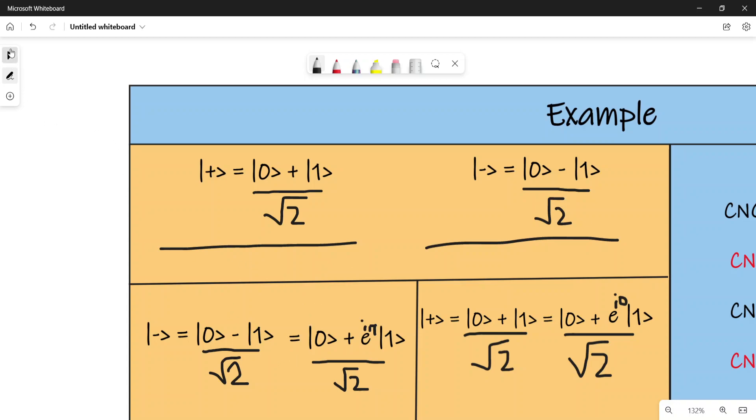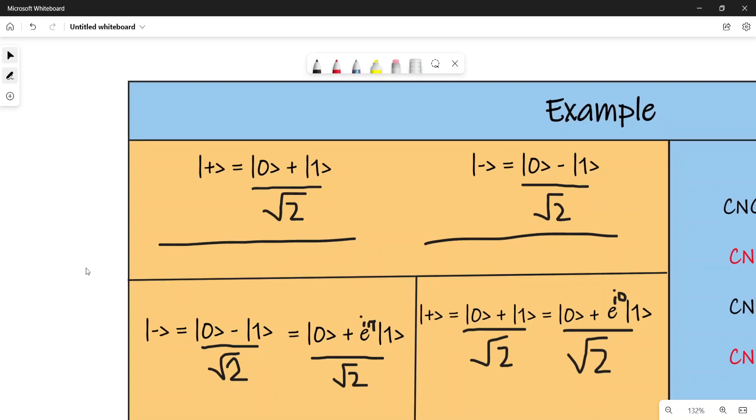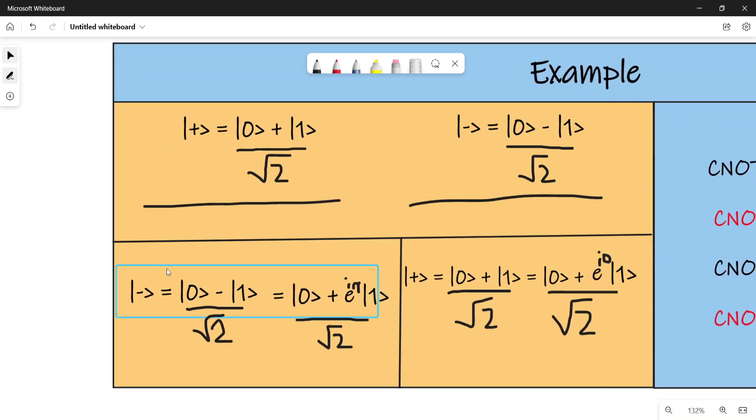Ket zero minus ket one can be written as ket zero plus e^(iπ) ket one. E^(iπ) is nothing but minus one, but you can write it that way. Similarly, ket plus can be written using e^(i0).